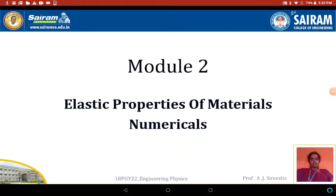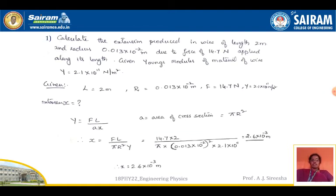In this session, we are going to see some of the numericals in the elastic properties of materials. Let us see the first numerical: Calculate the extension produced in a wire of length 2 meters and radius 0.013 × 10⁻² meters due to a force of 14.7 Newtons applied along its length. Given Young's modulus Y = 2.1 × 10¹¹ Newton per meter square.